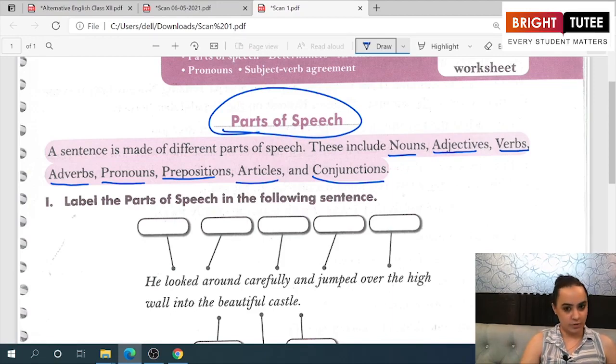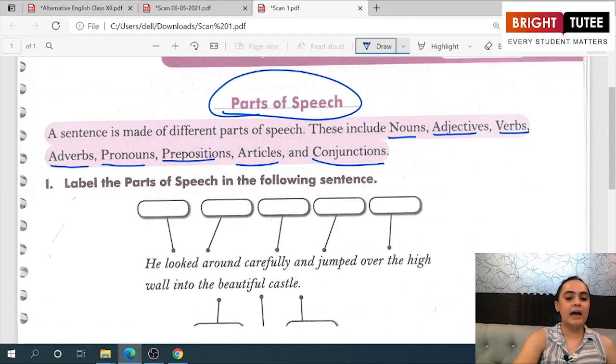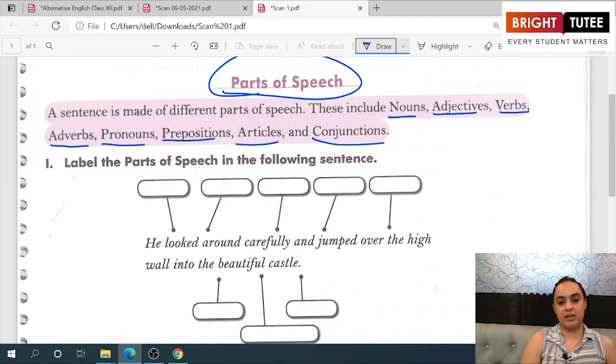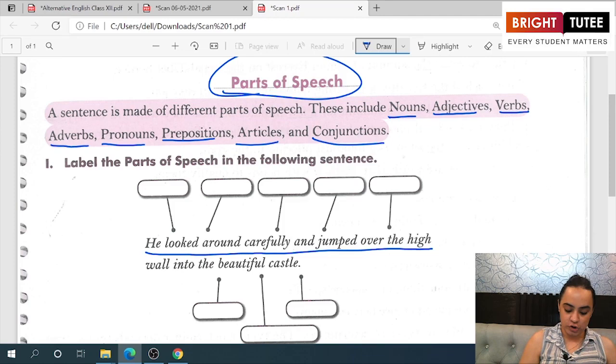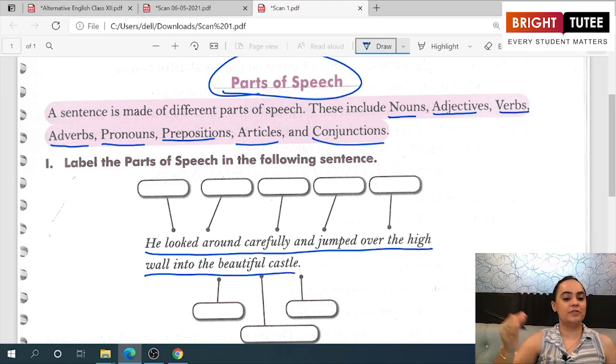We shall be studying each of these parts of speech in detail in the coming videos, but right now I am just introducing you to them. For that, look at this sentence given in your books: 'He looked around and jumped over the high wall into the beautiful castle.' You have to tell which part of speech each of the highlighted words are.